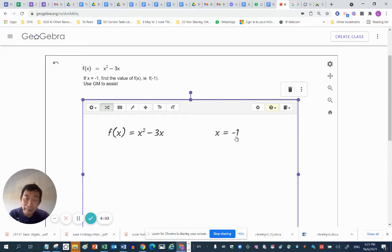Once you activate the graspable mass canvas, then you can press on the transform and you can drag negative 1, x equals negative 1, into the fx. When you do that, you will discover that the x squared and the negative 3x, the x is being replaced by negative 1.